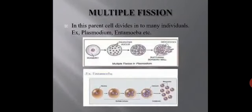The next type of asexual reproduction is multiple fission. As you can infer from the name itself, 'multiple' means many organisms are going to be produced by the fission process, and 'fission' means splitting. So in this type, the parent cell divides or splits into many individuals. Multiple fission is generally seen in the case of Plasmodium and Entamoeba.